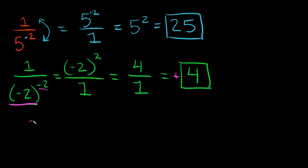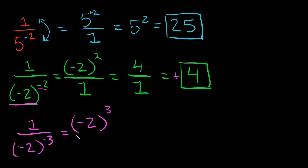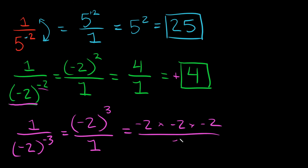What if I had 1 over negative 2 raised to the negative 3? We flip it again: negative 2 to the positive 3 over 1. That equals negative 2 times negative 2 times negative 2, all over 1. Negative 2 times negative 2 is positive 4, and positive 4 times negative 2 is negative 8 over 1. So your final answer is simply negative 8.